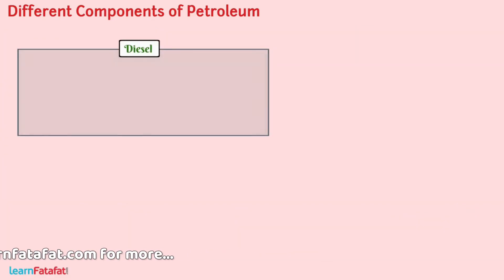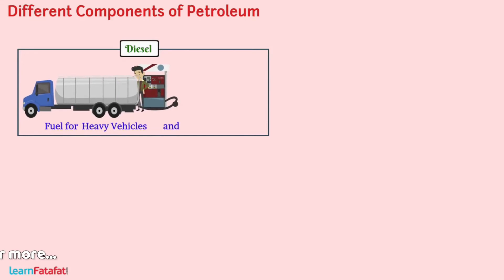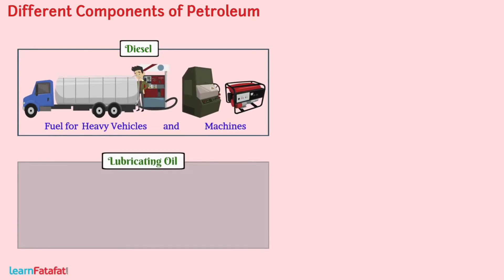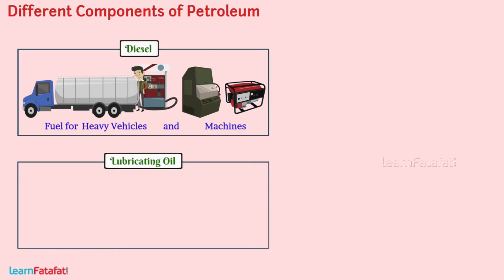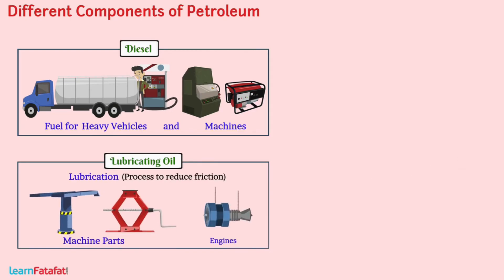Diesel is a fuel for heavy vehicles and machines. Lubricating oil is used for lubrication of machine parts, engines, etc.